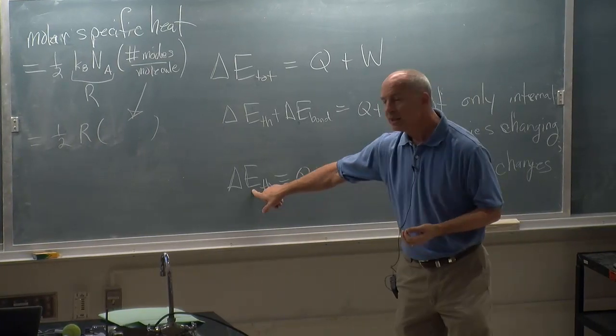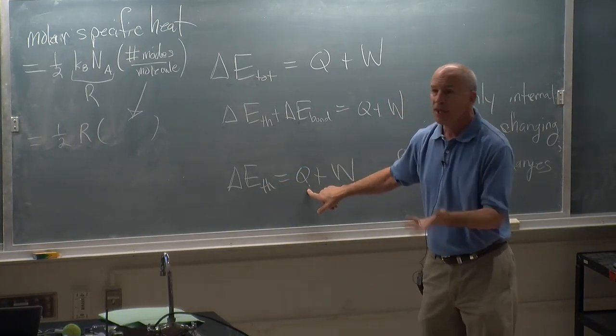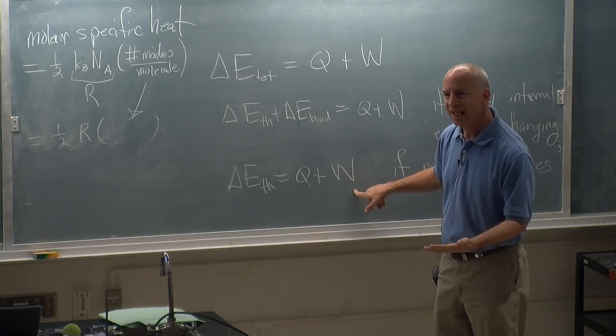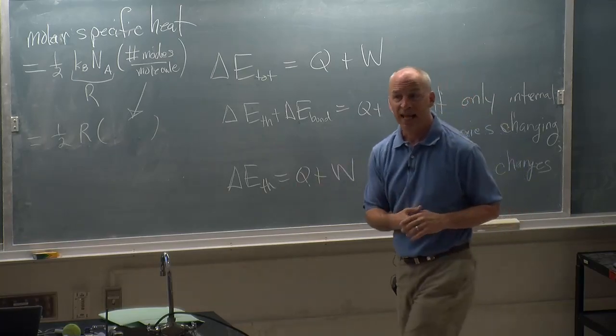Delta E thermal is negative. No heat was added. That means work W, the work added, is a negative number because work energy was taken out.